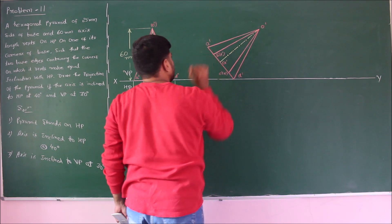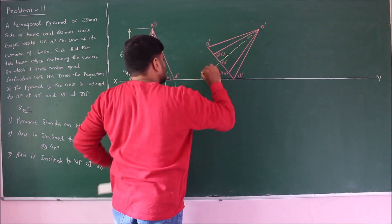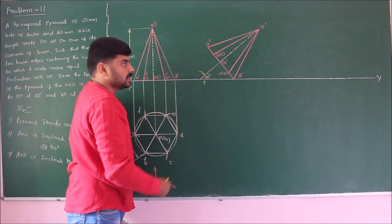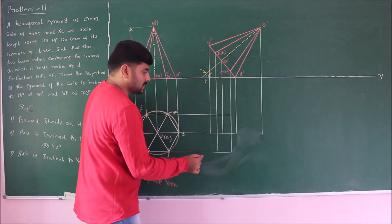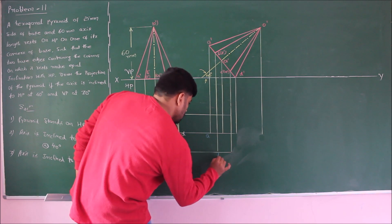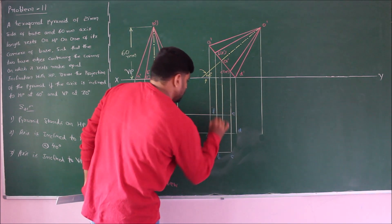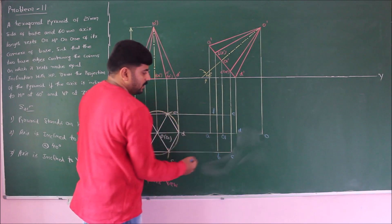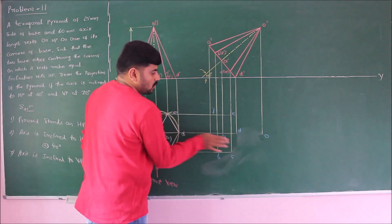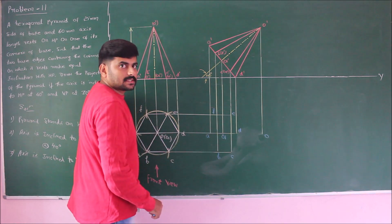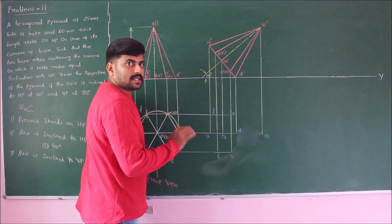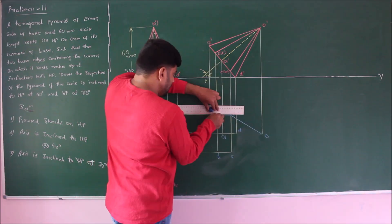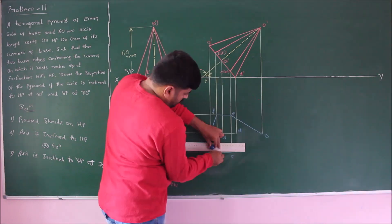The axis is inclined at 40 degrees with respect to HP. Now take the projection vertically downwards and also horizontally to get corners a, b, c, d, e, and f, along with axis points o1 and o. The slanted edge ao overlaps the axis so do not show the axis. To avoid confusion, mark the boundaries: o to e, e to f, f to a, a to b, b to c.